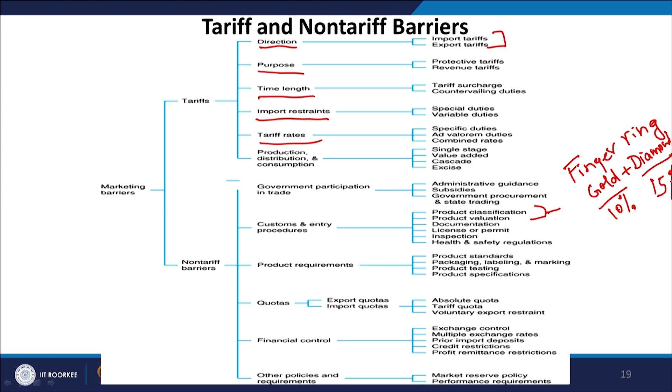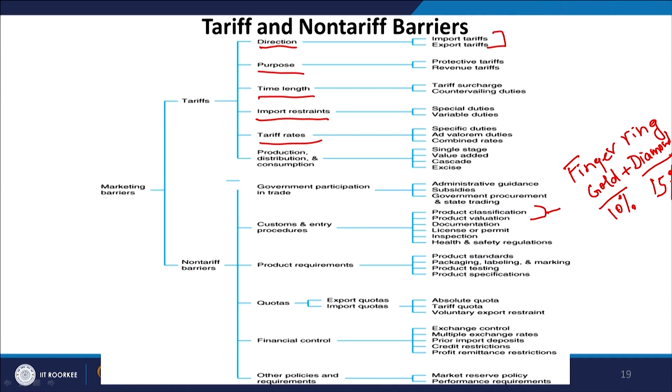There can also be product standards. What kind of electrically-powered goods can be exported or imported? What kind of packaging is required — can goods be packaged in a plastic box, or do we need jute or paper boxes? What kind of labeling and marking is required? What language should be used on each package, and should we have a different language for each country where we are exporting? What kind of testings and specifications will be used?